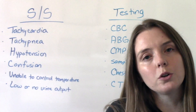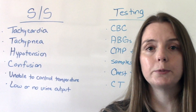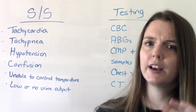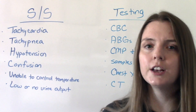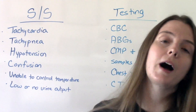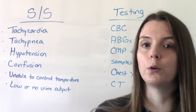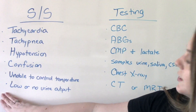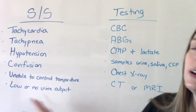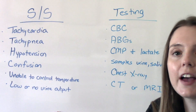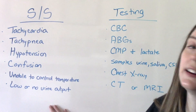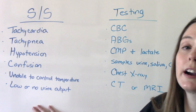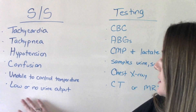They're unable to control their temperature. Sometimes people with sepsis will have very high fevers, and sometimes they'll have very cold temperatures — it can go either way. Monitoring their temperature and keeping it in normal range is going to be a priority. They can also have little to no urine output, because the kidneys are being affected and not getting enough perfusion, so they're not working as well and we won't see that output.